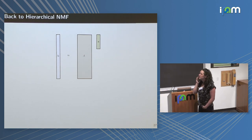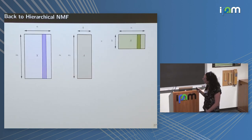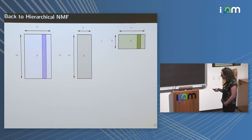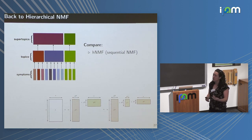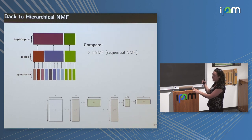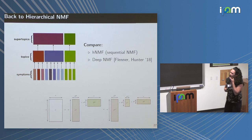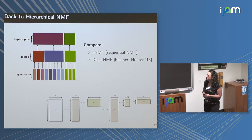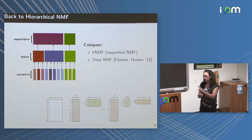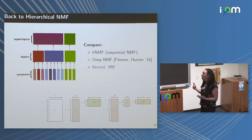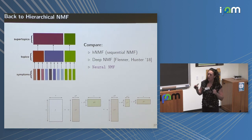Zooming back out: we solve the least squares problem for the forward propagation step of neural NMF, which solves the hierarchical NMF model. I'll compare three methods: first, naive sequential NMF — applying your favorite NMF method at each layer in sequence; second, deep NMF by Flenner and Hunter, which attempts to use later-layer factorizations to influence previous layers but only ties two consecutive layers together; and third, our method neural NMF, which does full backpropagation along all layers simultaneously.